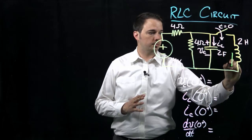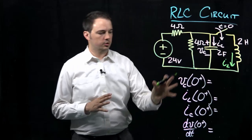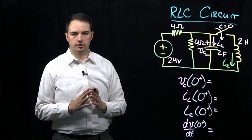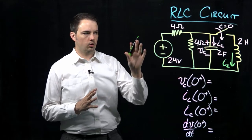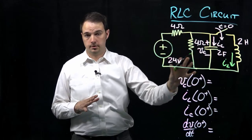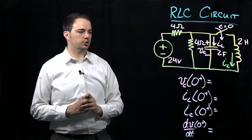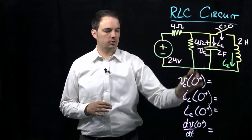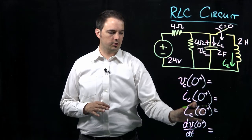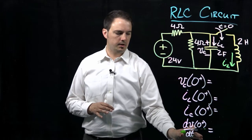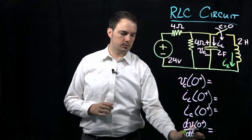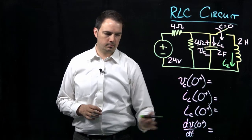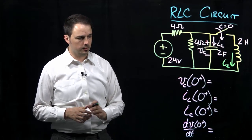Adding current IL to the diagram, for the first part we'll go through all of our initial conditions. Before closing the switch, we assume the circuit is already at steady state. We need to evaluate the voltage across the capacitor, the inductor current, the capacitor current, and because it's a second-order RLC circuit, we also need the derivative of the voltage at time zero plus.